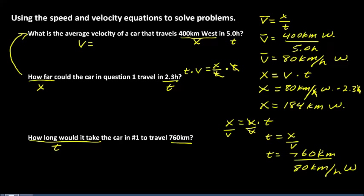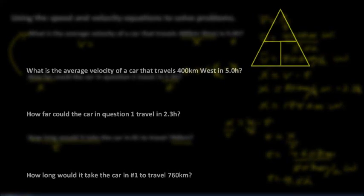Kilometers cancel out because they appear both above and below the division line. When we work this out, it equals 9.5 hours. So it would take this car 9.5 hours to travel 760 kilometers. We worked three problems, rearranged the equation, showed how to use it three different ways, and used some very basic algebra to make those changes.